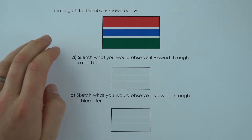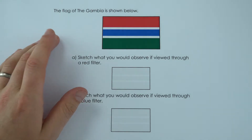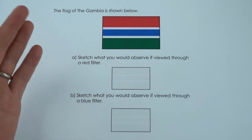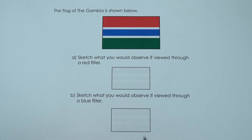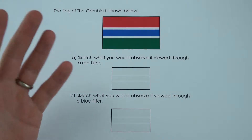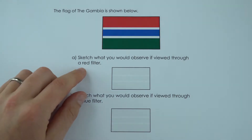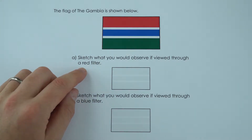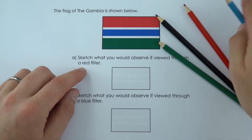I must admit I didn't know the flag of the Gambia before I looked at this question, but it's really nice because it's got red, green and blue, and these are the primary colours of light. We need to just sketch what you'd observe if viewed, first of all, through a red filter.